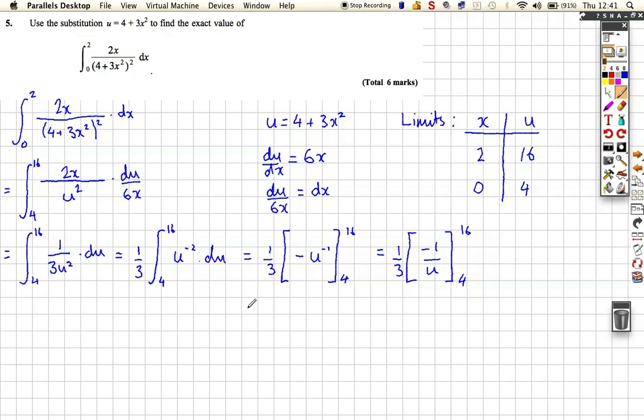So then I can just work out what this is. So, let's come back over here. So, it's 1 third of, well, let's put 16 in. It's minus 1 sixteenth, and then it's going to be minus, and then you're going to put 4 in, so it's minus 1 over 4, actually it becomes plus 1 over 4.